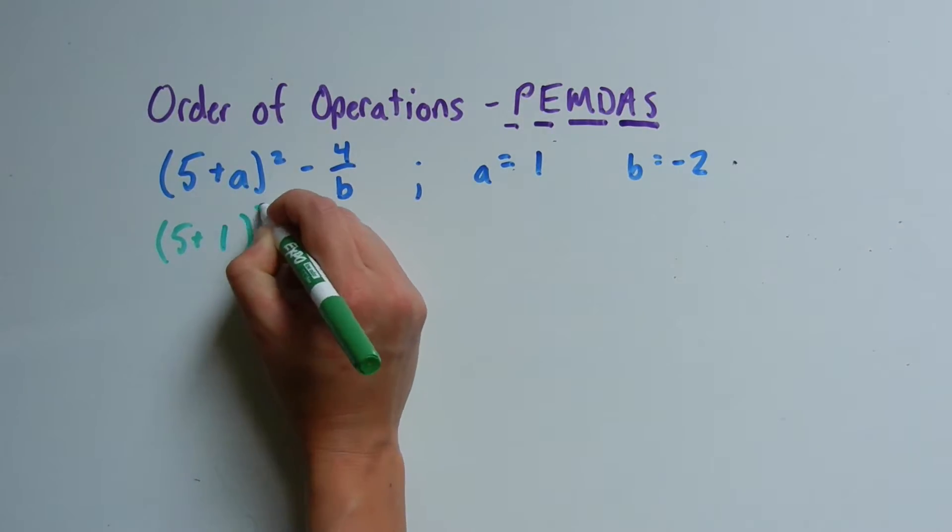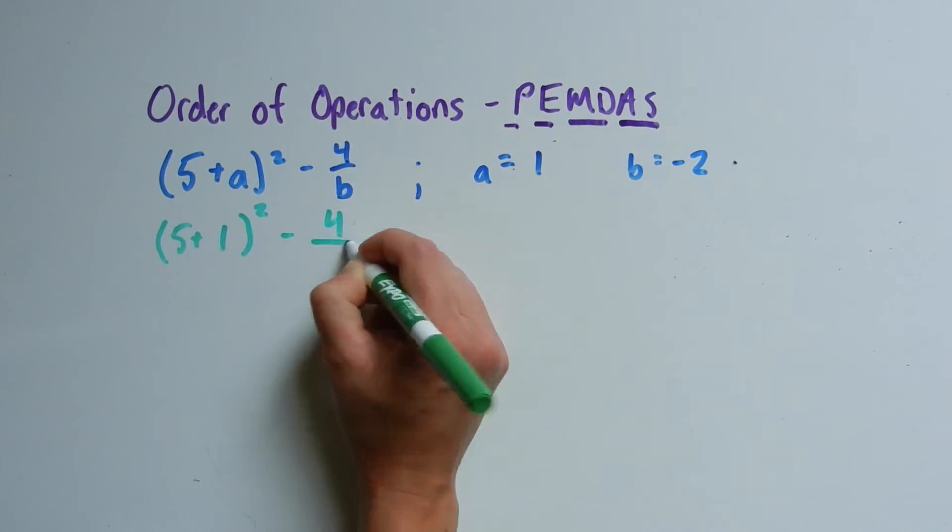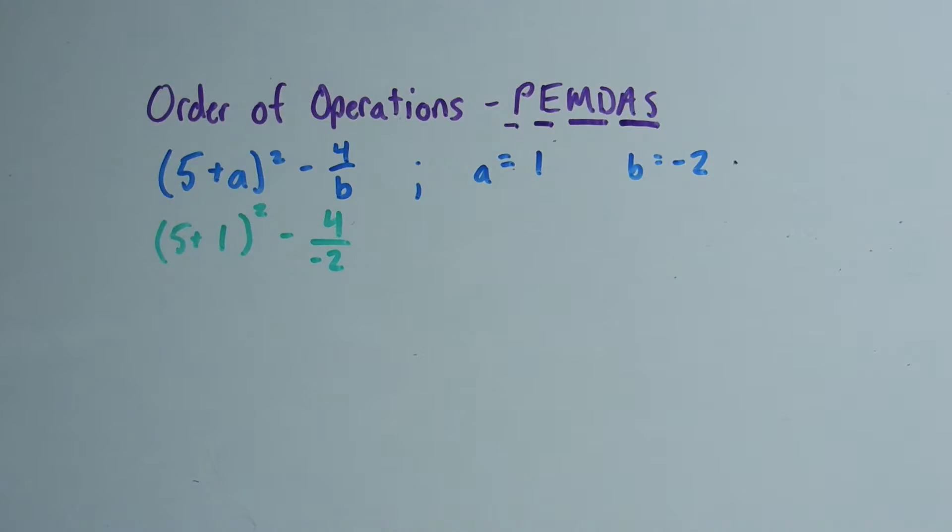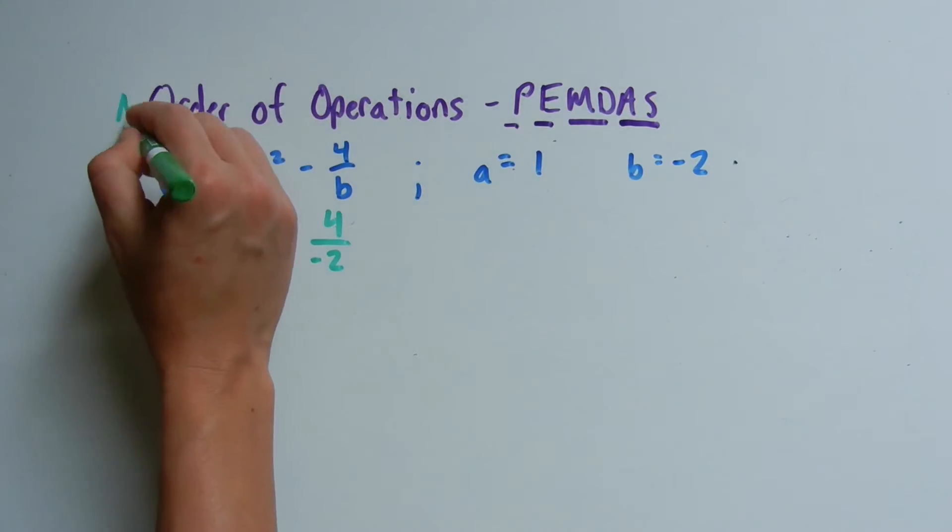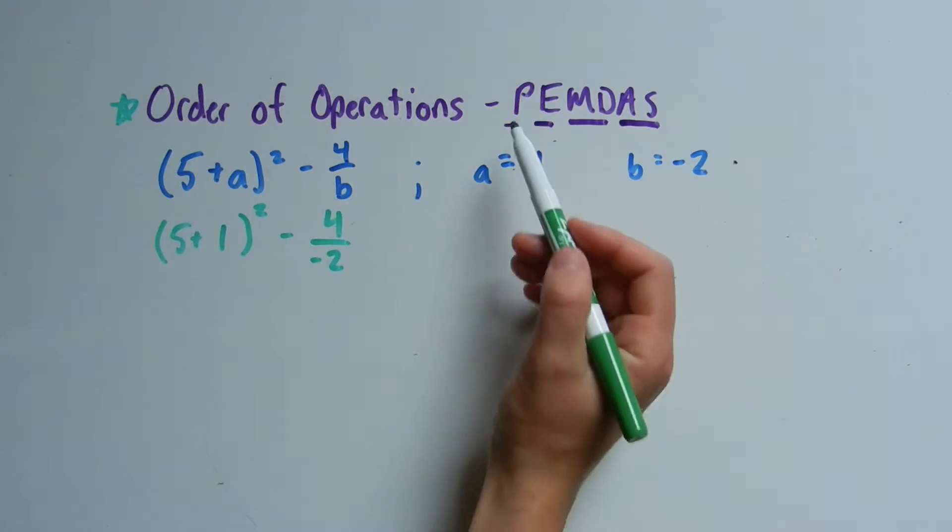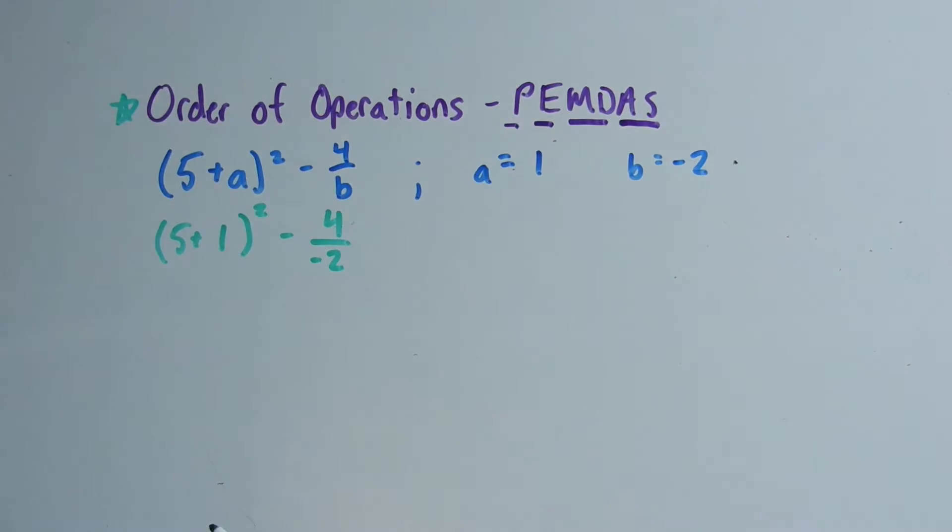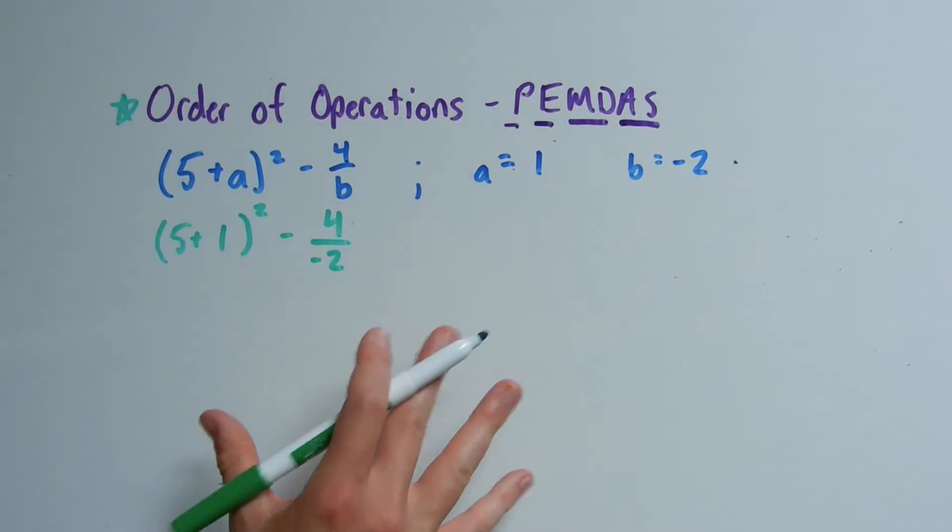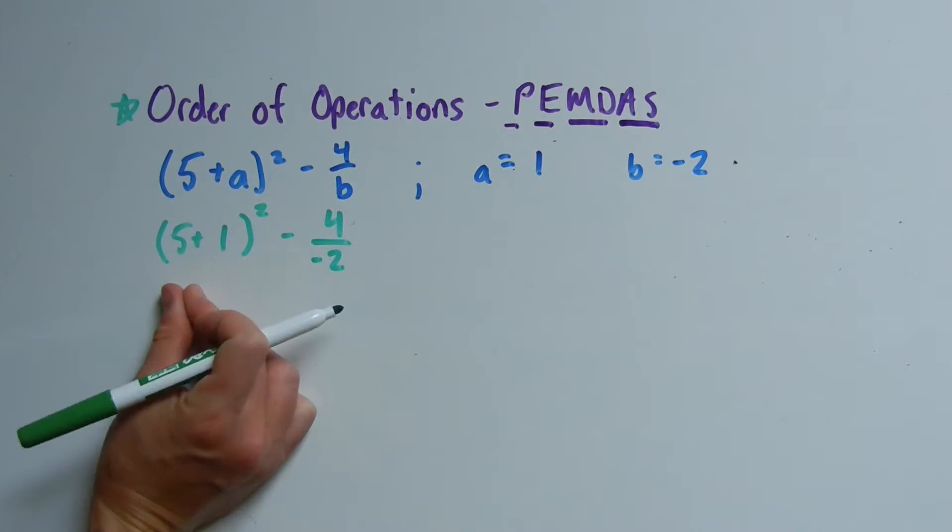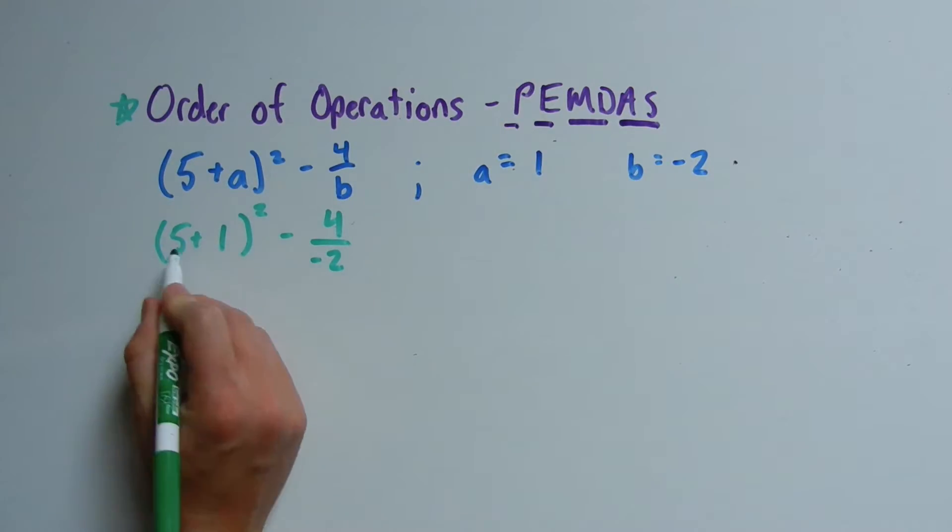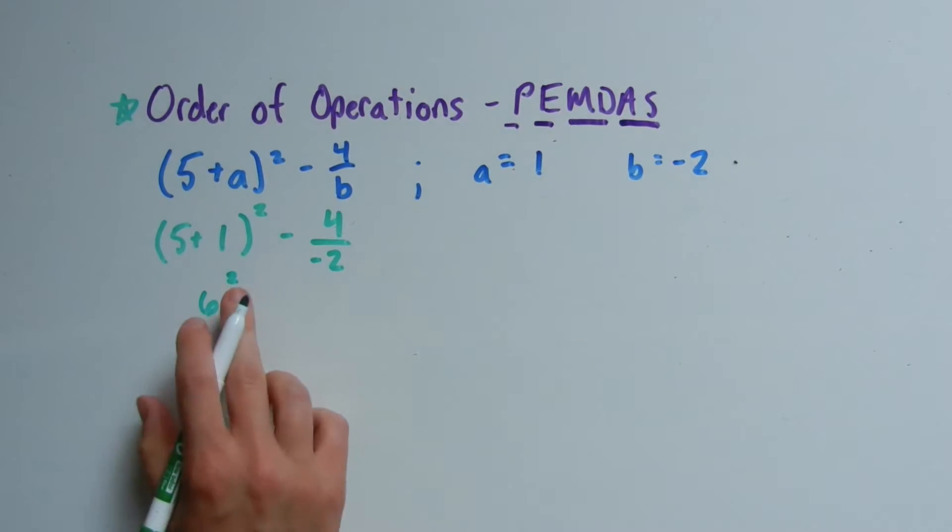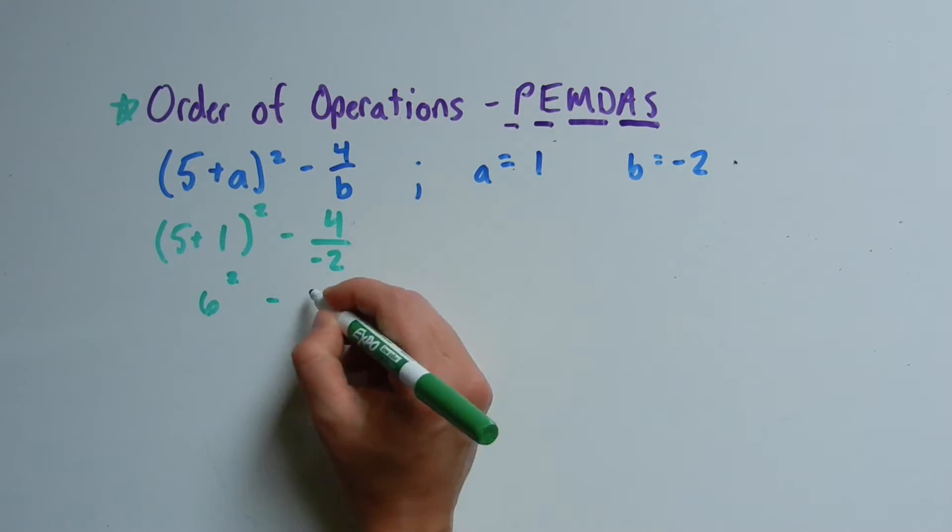Now we can evaluate it using the order of operations. So what's first? Parentheses. We have one set of parentheses and that's around the 5 plus 1, so we evaluate what's inside of the parentheses first. 5 plus 1 is 6, so we're left with 6 squared minus 4 over negative 2.